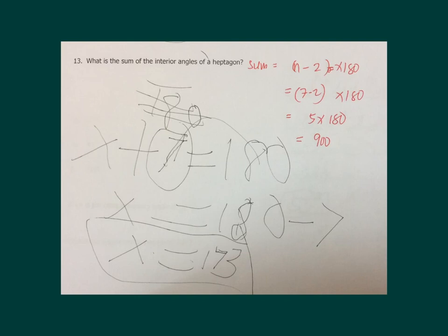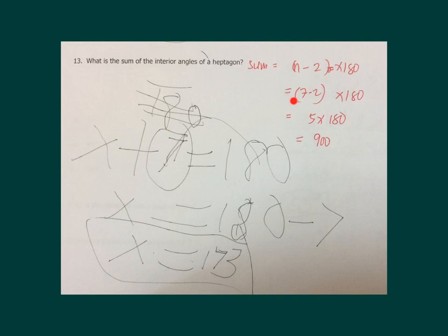Finally, number 13: what is the sum of the interior angles of a heptagon? The formula is (n minus 2) times 180, where n is the number of sides. A heptagon has seven sides, so replace n with 7. Seven minus 2 is 5, and 5 times 180 is 900. You can answer this with a calculator or do it manually.